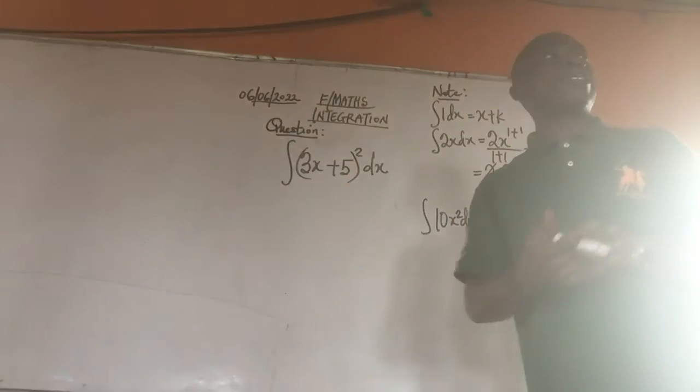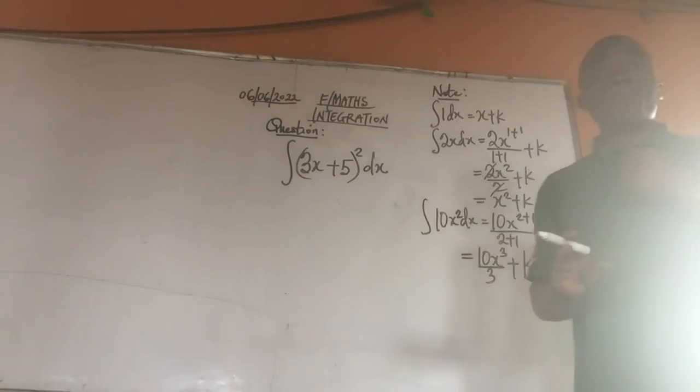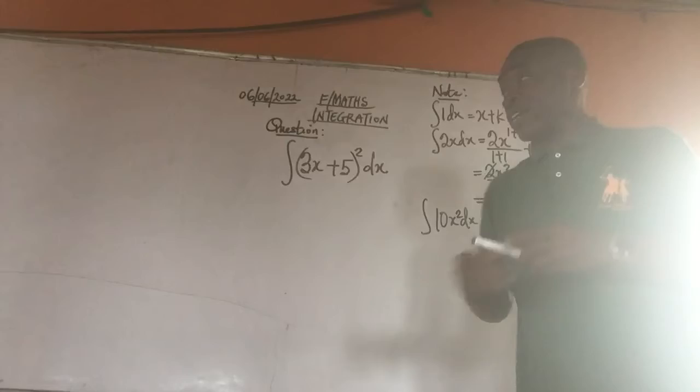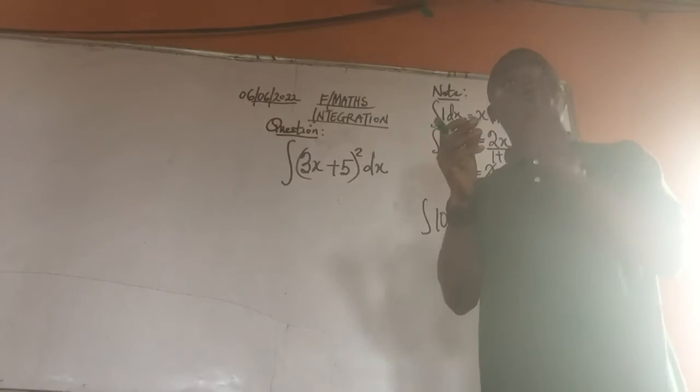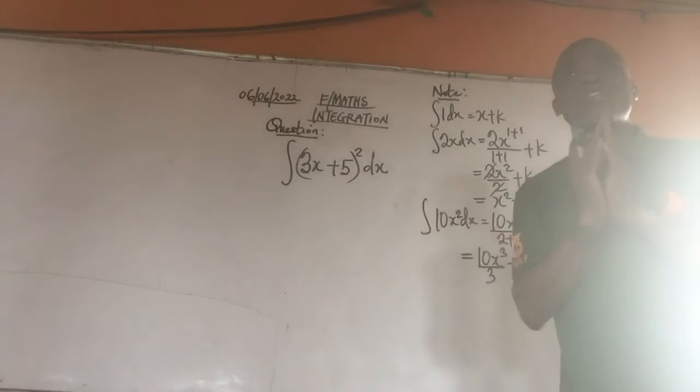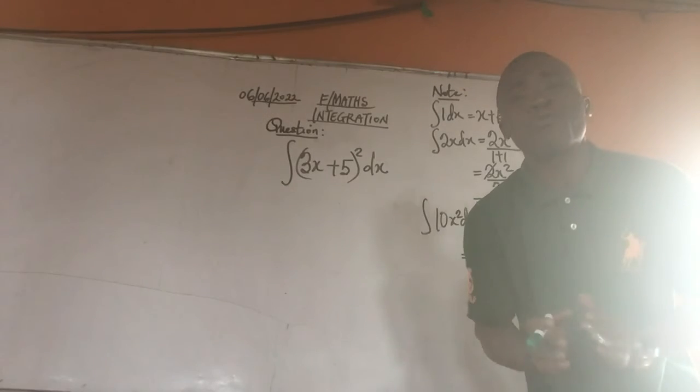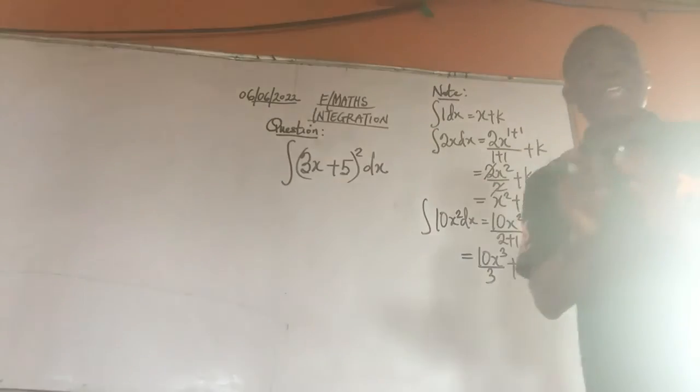Then we are coming to a question like this. How do we integrate this? That is the question. Most students, when they are integrating a question like this, what they normally do is they will split the 3x plus 5 into 2 parts because of the power of 2. And at the end of the day they will end up messing up with their results. They don't normally get the answer right. Now there is a technique we use for solving a question like this on integration.